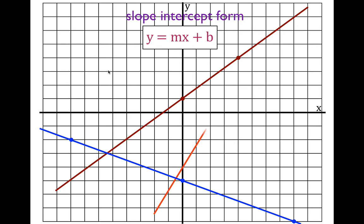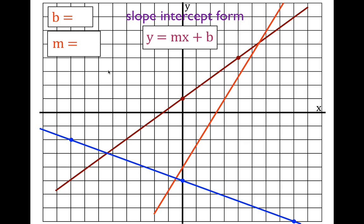Now the nice orange line. Write down b equals, write down m equals. The y-intercept is right here — if that is minus five, this must be minus four. Where does it cross the grid next? We go up five and over three, so the slope is positive five-thirds. Therefore the equation for that line is y equals five-thirds x minus four.